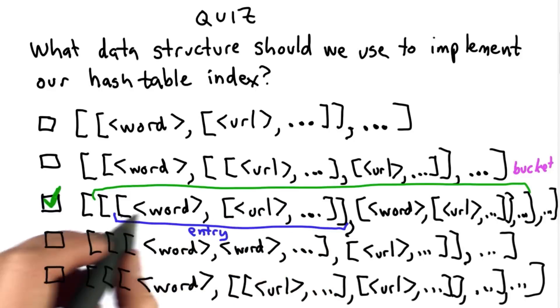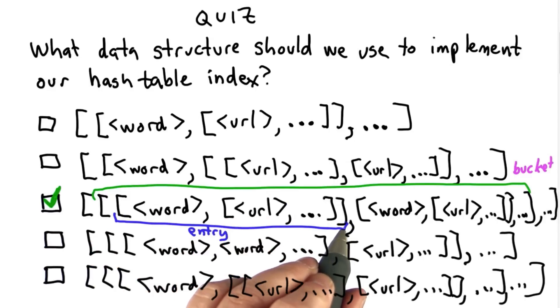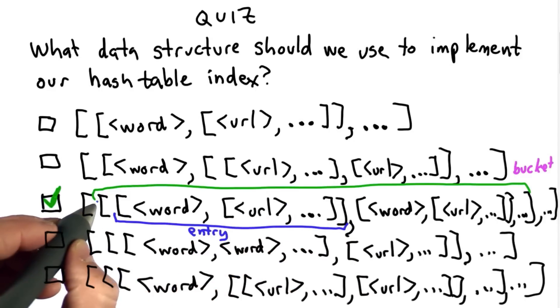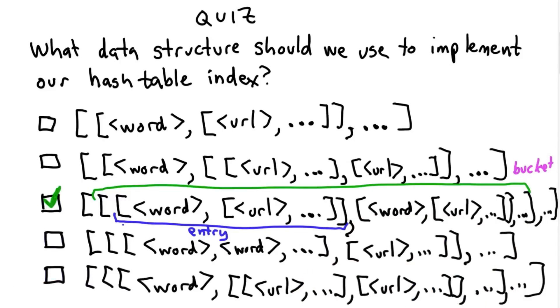This corresponds to what the entries were in our previous index. But now, because we want to make it a hash table, we're going to collect them in buckets. So list most of those entries, and each element in the outer list corresponds to one bucket.